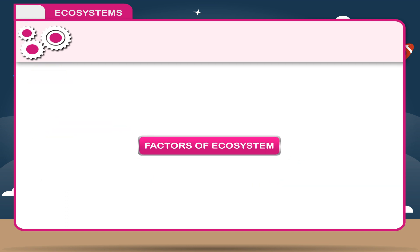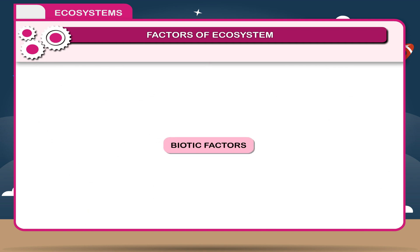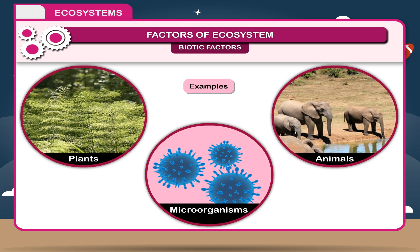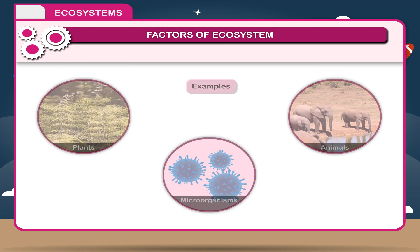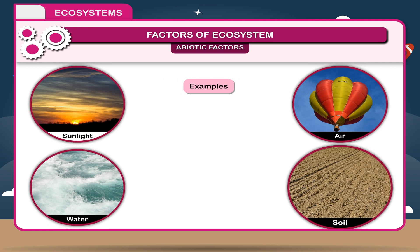An ecosystem consists of two factors or components: A. Biotic and B. Abiotic. Biotic factors — the living organisms are called biotic components or living components of the ecosystem. Examples: plants, animals and microorganisms. Abiotic factors — the non-living things are known as abiotic components or non-living components of the ecosystem. Examples: sunlight, air, water, soil, etc.